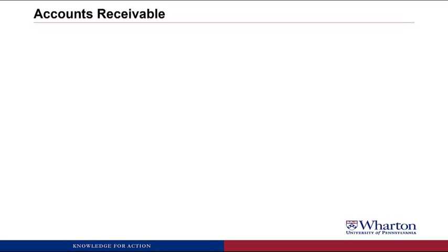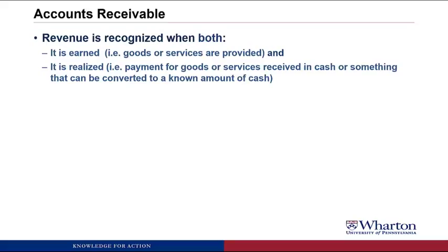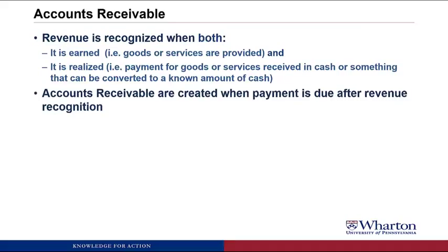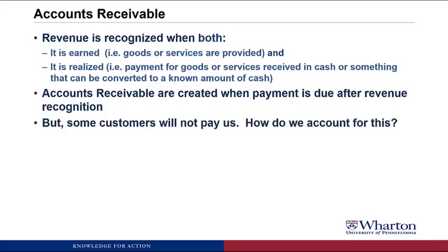We're going to start our look at accounts receivable with a review of the revenue recognition criteria. For revenue to be recognized it both has to be earned, which means that the goods and services are provided, and realized, which means that you get payment either in cash or something that can be converted to a known amount of cash — like an invoice which has clear payment terms. That invoice we would call an accounts receivable. It represents the amount the customer owes us after we record the revenue. One thing we're going to talk about now is that some of these customers won't actually pay us.